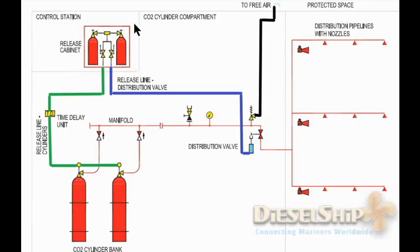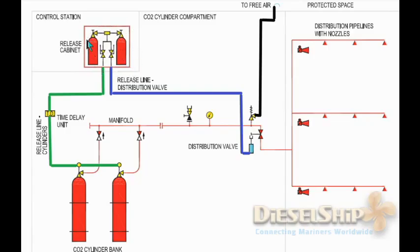Let's see what are the components inside the valve control station. This valve control station can be located at different places but definitely outside the space to be protected — here, the engine room. Otherwise you can't operate it in the event of fire. There are three main possibilities for its location: one is the fire control station, another is the CO2 room itself, and the third is just outside the engine room entrance.